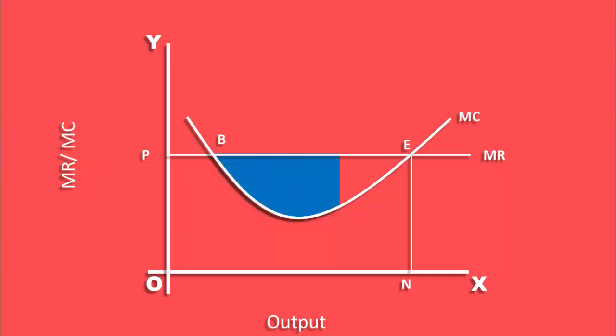As the two conditions are satisfied at point E, the firm's profit is also maximum. The blue colored area shows this. The area that lies below the marginal revenue curve and above the marginal cost curve is profit.